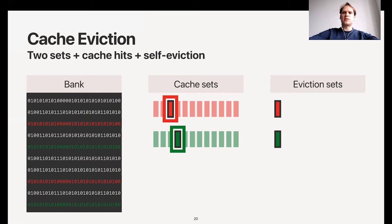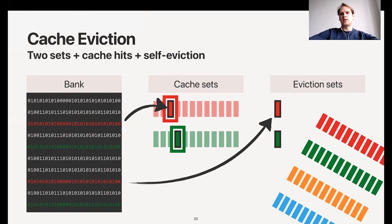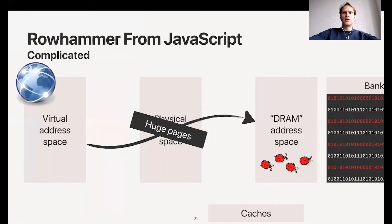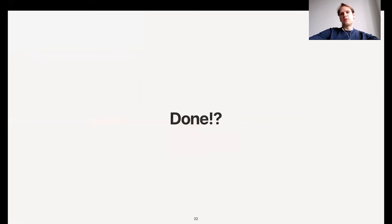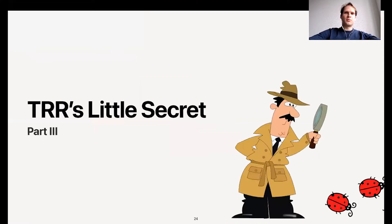This is our insight: our eviction sets can be composed only of other aggressors that we will be accessing anyway. Now these aggressors will basically be evicting each other, and this is very fast because we don't have extra misses - we just have these bunch of hits. It's much better than the situation we had before. Now you might say, is this it, are we done? But unfortunately we didn't see any bit flips at this point.